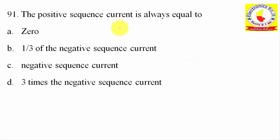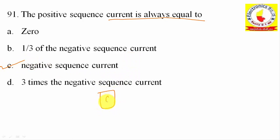91st question: The positive sequence current is always equal to the negative sequence current. Option C is correct.